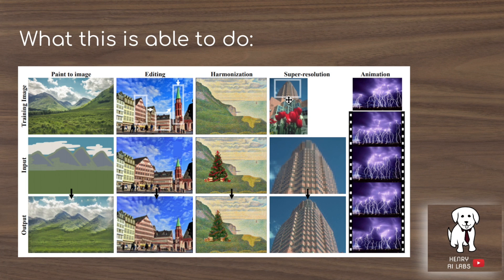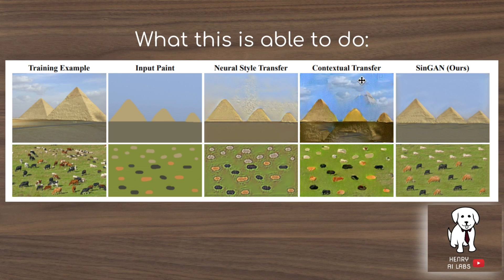Super-resolution is the idea of taking a 128x128 image and upsampling it to 512x512 while preserving the semantics of the image. Animation is a really cool application where you start with an original image and perturb it such that it generates a plausible animation. You can also see the differences between traditional algorithms like neural style transfer and contextual transfer compared to SYNGAN.